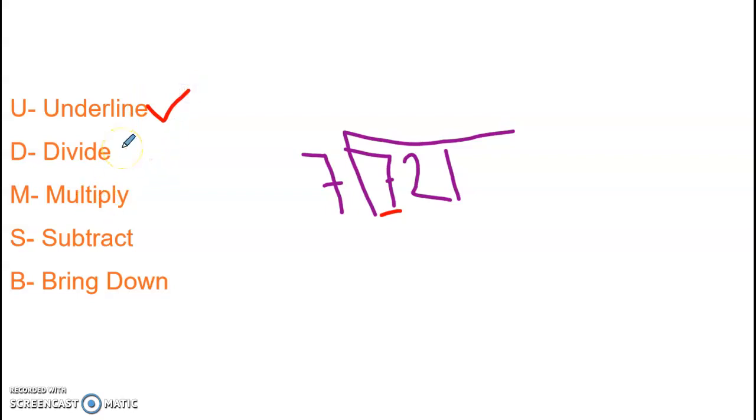Then I divide. I ask myself one of two questions. What is 7 divided by 7? Or, if I don't know that, I can ask myself, how many times can 7 go into 7? Well, I know 7 divided by 7 is 1. So I put that 1 above my house, right above my underline number. Cool. Divided.